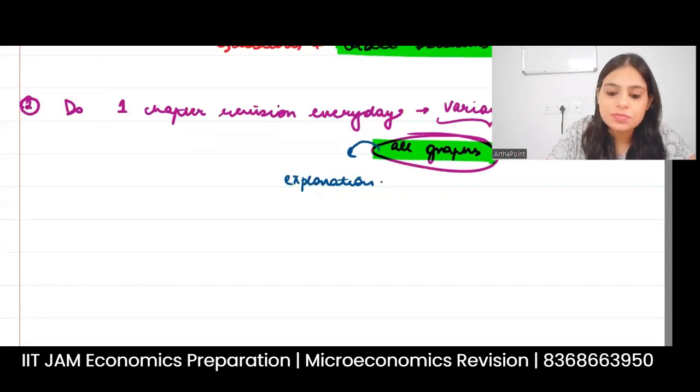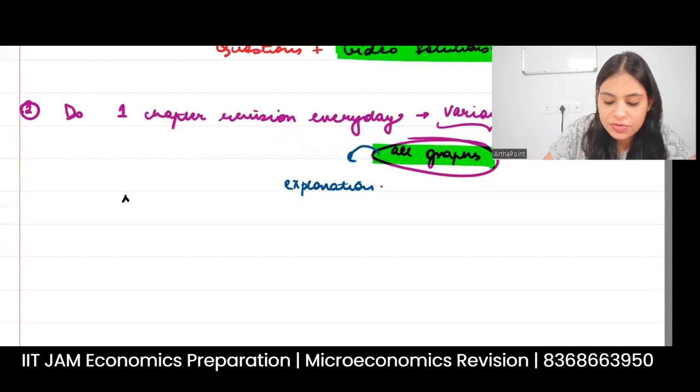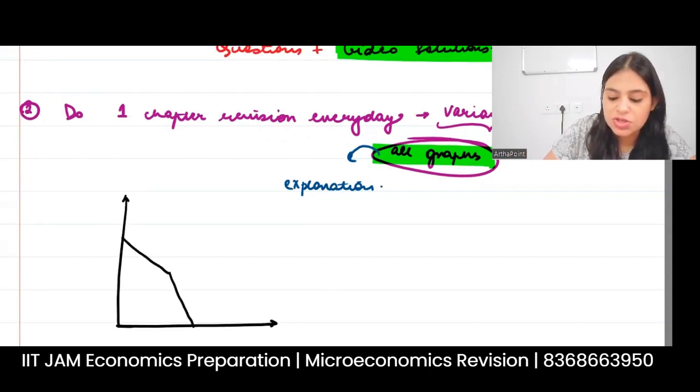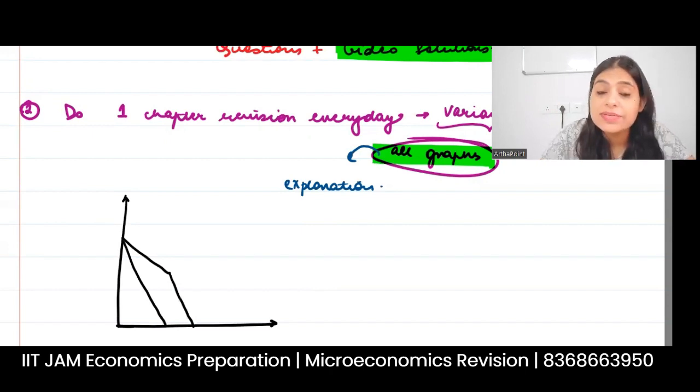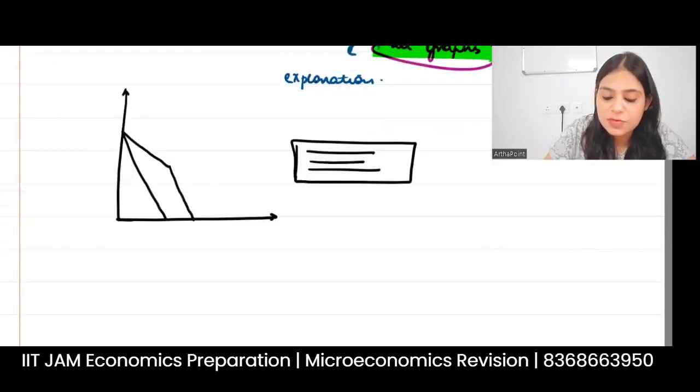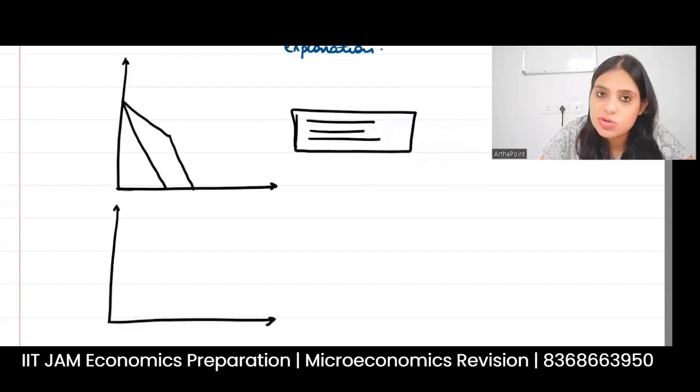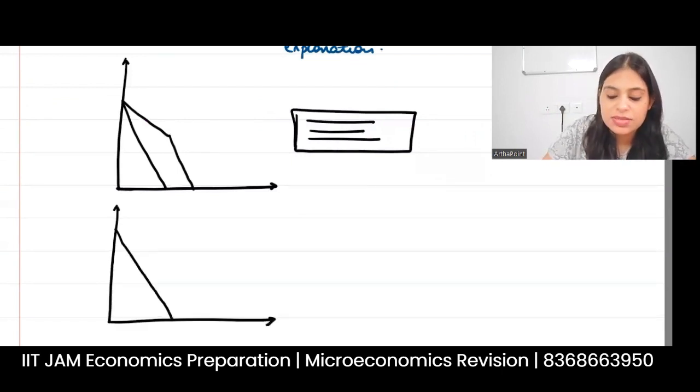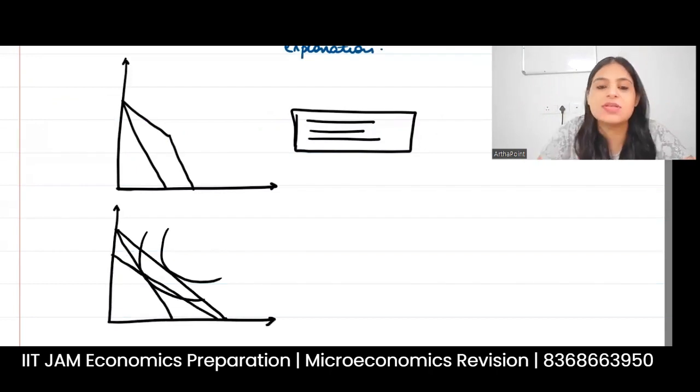For example, if you see a graph related to the food stamp program, something like this, this is your new budget I suppose, then in that graph only the explanation of the food stamp program will be given just below that graph. Similarly, if you see a graph showing the substitution effect, then just below the graph you will see the explanation as to why that substitution effect happens in the way it happens.